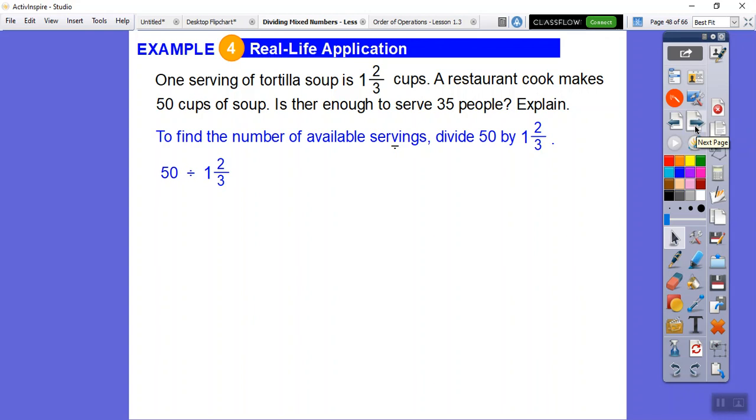So here we go. Now I'm going to change this to an improper fraction. I'll change that to an improper fraction. Also make it 50 over 1. And then our keep flip change. So I'm going to keep this one the same, flip this one to 3 fifths and change that to a multiply.